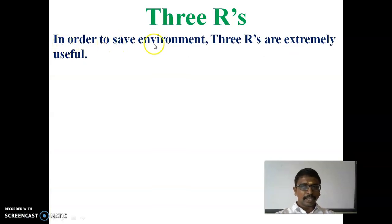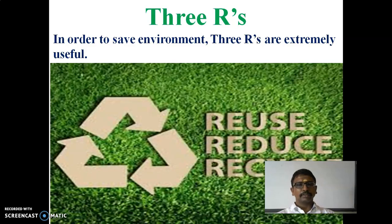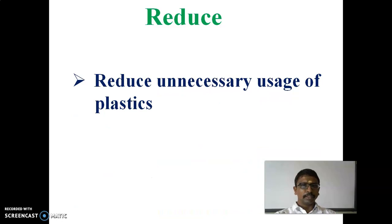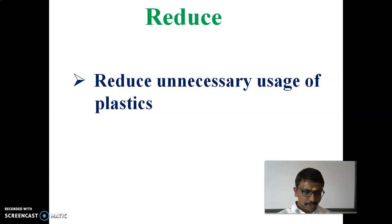Next we will see the 3Rs. In order to save the environment, the 3Rs are extremely useful. We have to follow the 3Rs to save our environment. The 3Rs are: Reuse, Reduce, and Recycle. The first R — Reduce — means to reduce unnecessary usage of plastics.